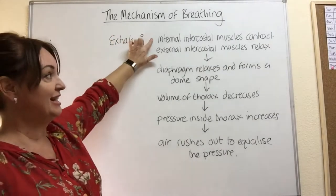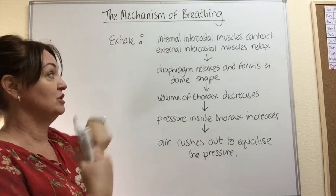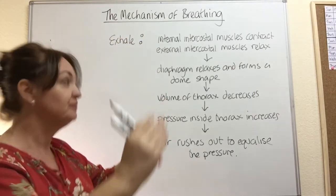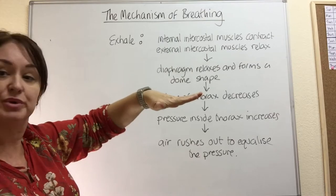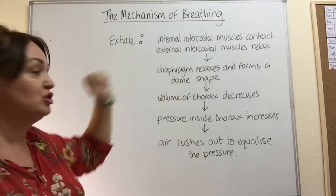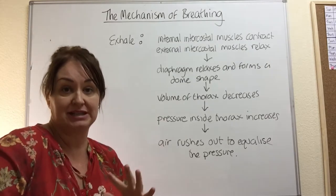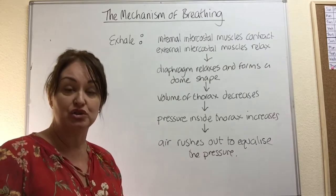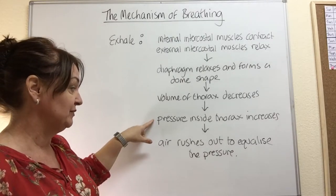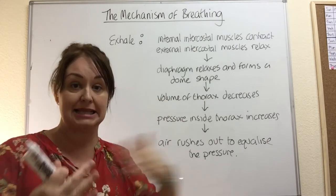Let's get a flow chart down for exhalation. The internal intercostal muscles contract, the external ones relax, the rib cage moves down and in. The diaphragm relaxes and forms a dome shape — going from flat to dome. All of that makes the volume of the thorax decrease, but you've still got the same amount of air in there, so the pressure of that air increases, and therefore air rushes out to equalise that pressure.